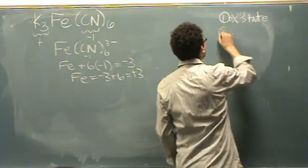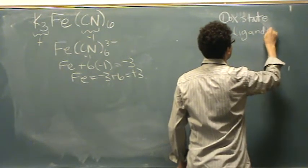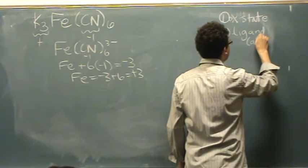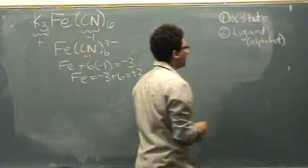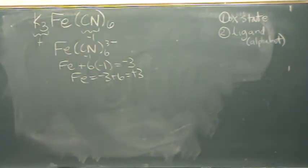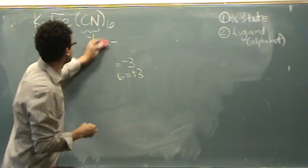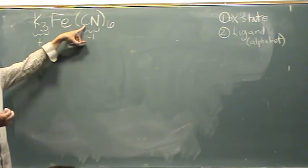Second step, work on the ligands, ligand names, and you want to get them in alphabetical order. So put them in alphabetical order if there's more than one type of ligand. In this case, there's only one type of ligand. So this is CN, cyanide, we'll change that to cyano.